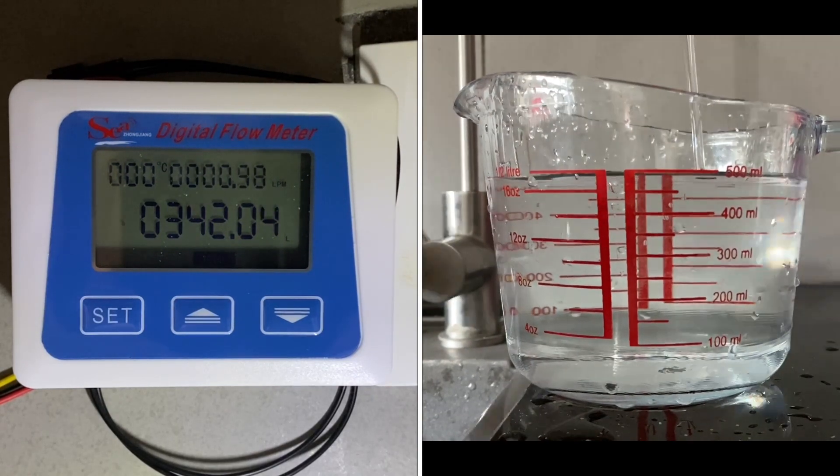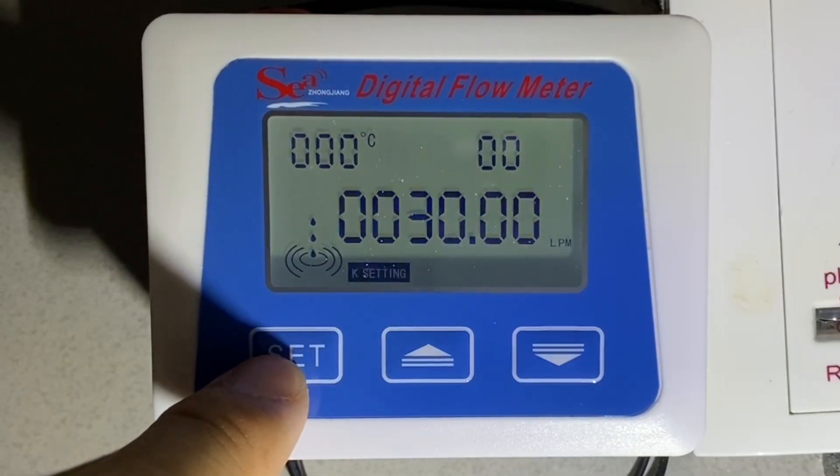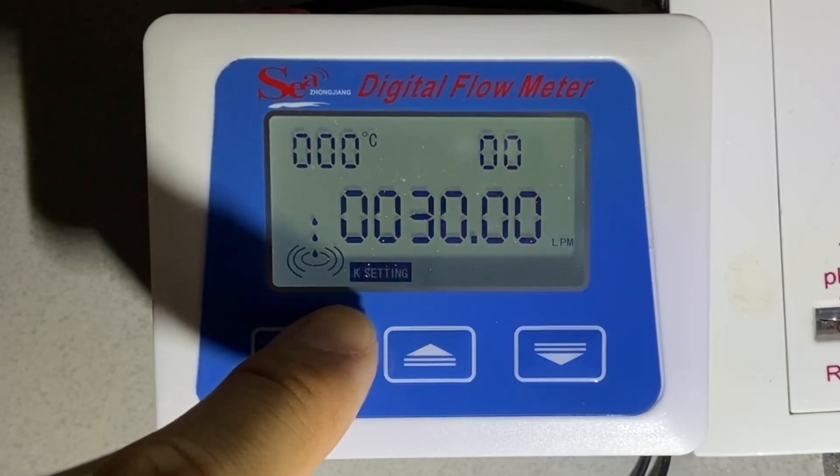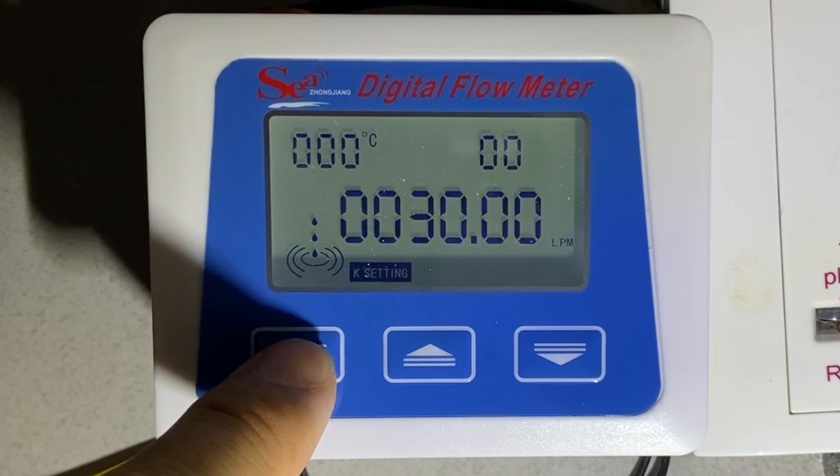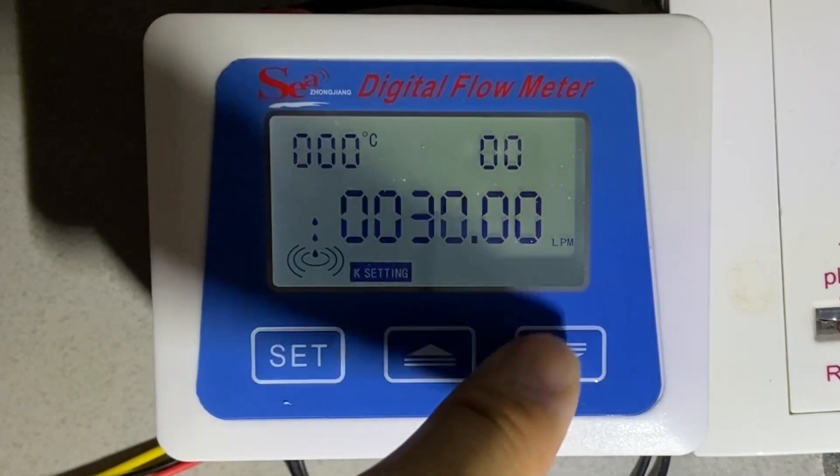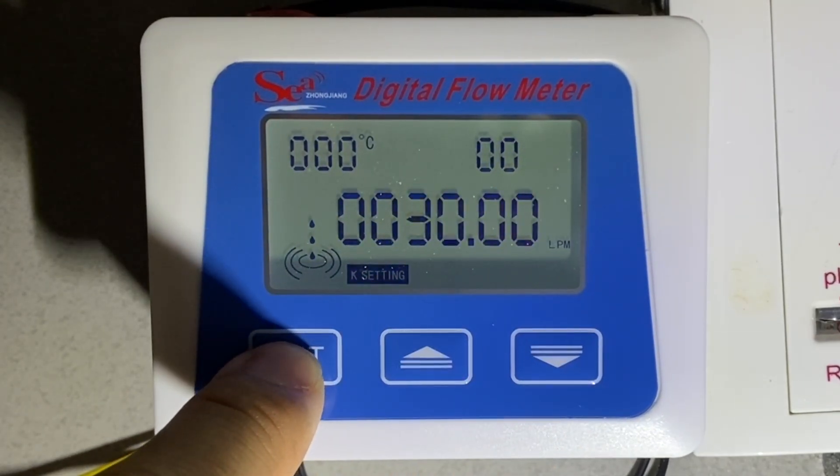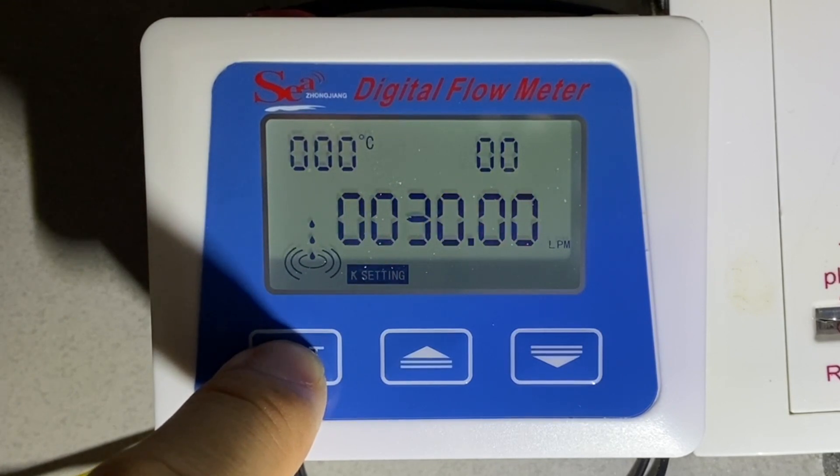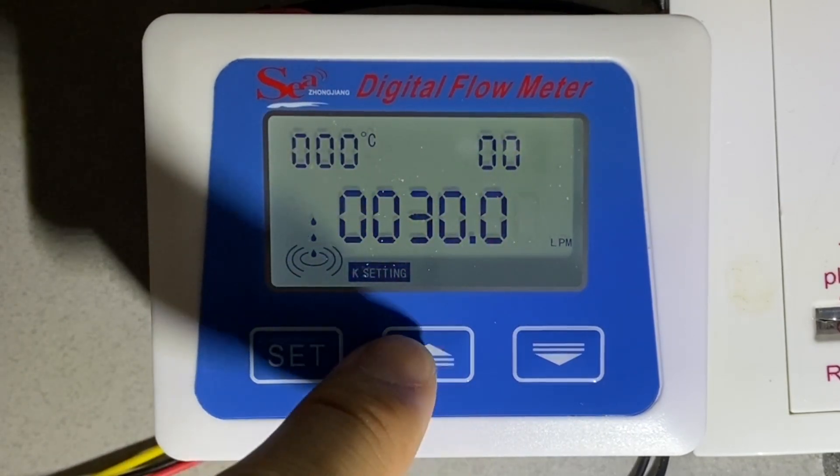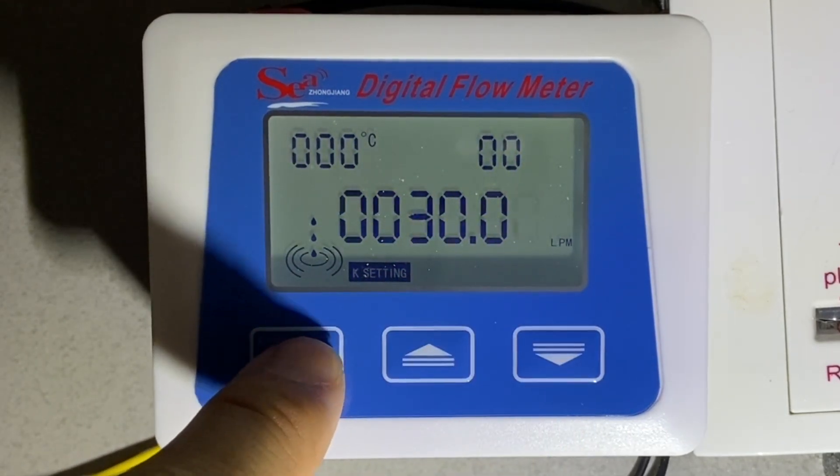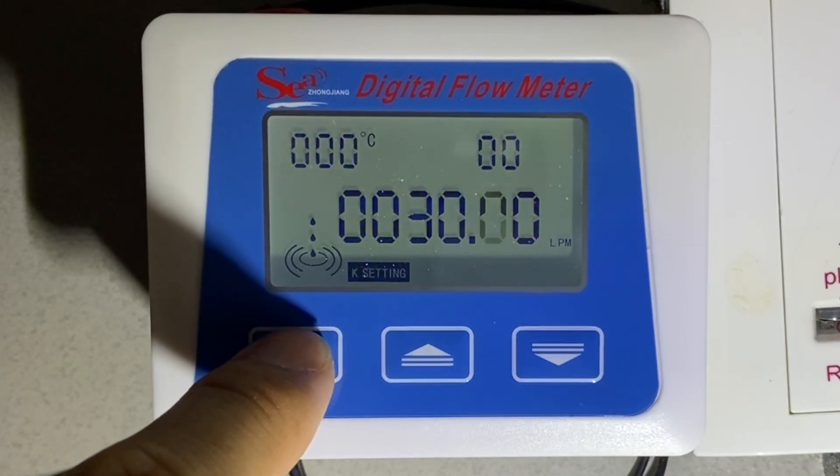Yes, it increased by 0.5 liters. So to do that, you press and hold the SET button, move on to K setting, and then you press and hold the SET button again so that one of the digits will start to blink. Then you press up and down to change the digit, and then you press SET again to move on to the next digit.